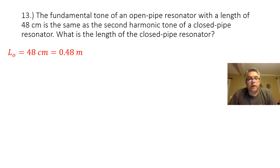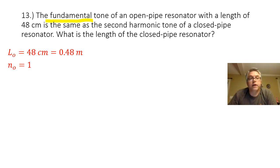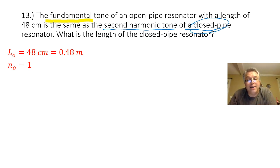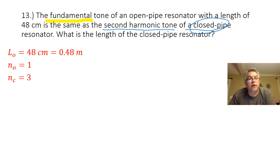For the closed pipe, I'm looking for the second harmonic tone. Because it is a closed pipe, I know that closed pipes only have odd-numbered harmonics — no even-numbered harmonics. So the second harmonic tone in a closed pipe is actually the third harmonic. My harmonic number for the closed pipe is 3, because it's the second odd number.